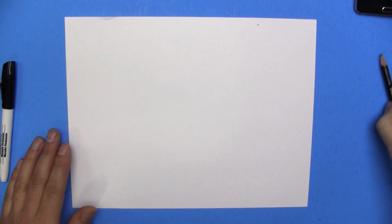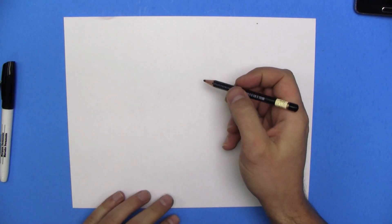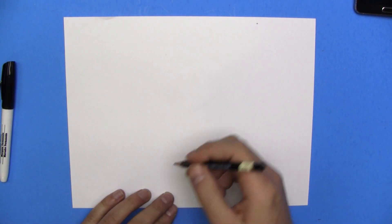If I'm going too fast, press pause. You can always rewind me and watch me again. And I'm going to draw with a pencil, just in case I need to erase.